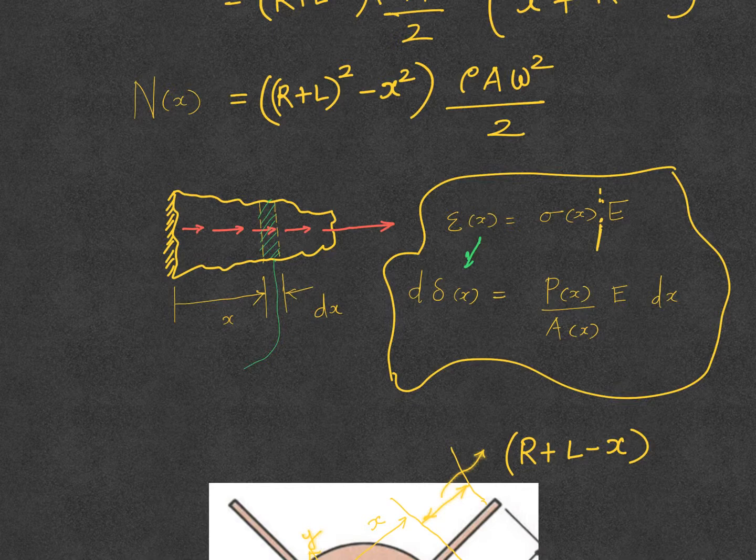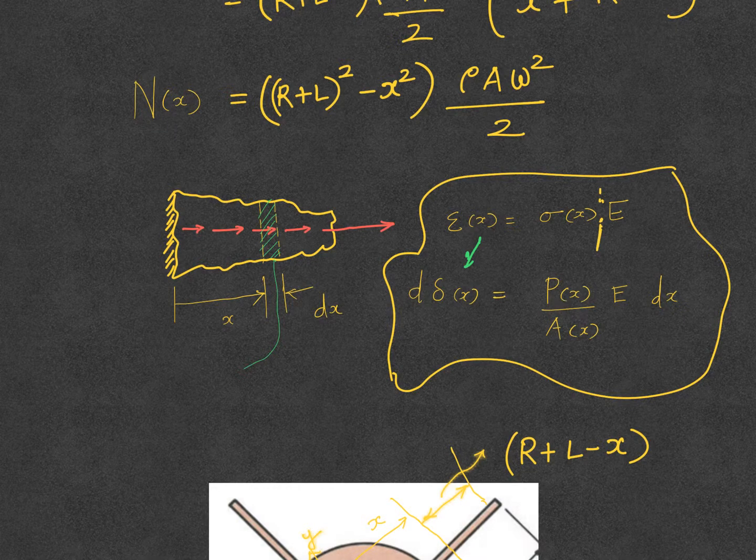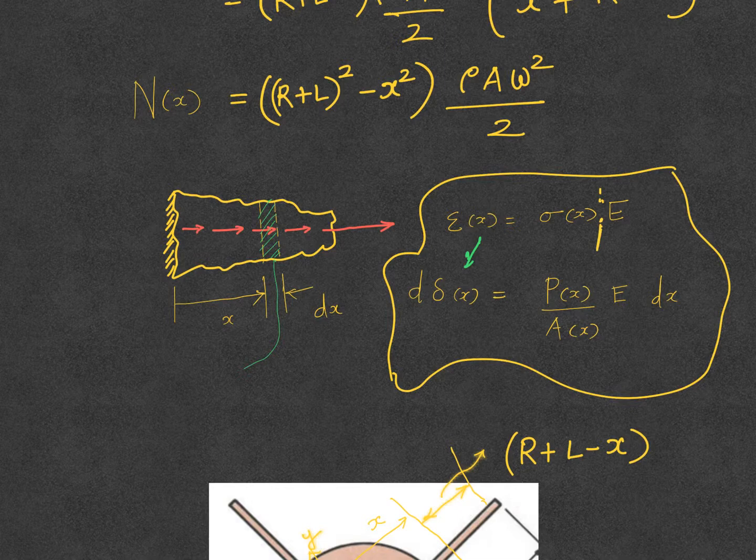That will be equal to P(x), which is the same as N, the force acting at that section divided by the area A. In our case, since the blade is prismatic, A is a constant, not a variable with respect to x. E will come in the denominator here as well—it is σ(x)/E.